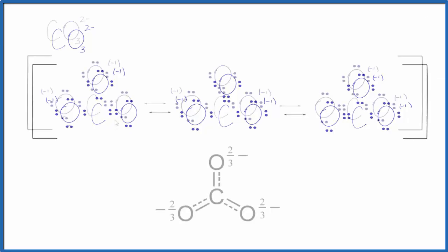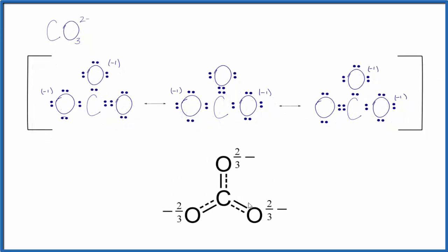That might look like this. You can see with this representation, we really just have an average of these three here. This is Dr. B with the three equivalent resonance structures for CO3 2-. And thanks for watching.